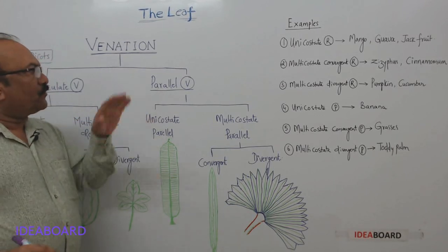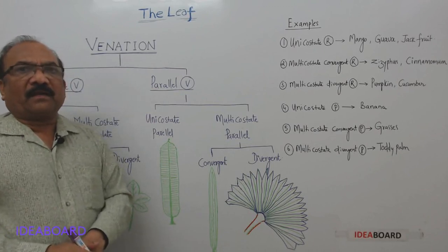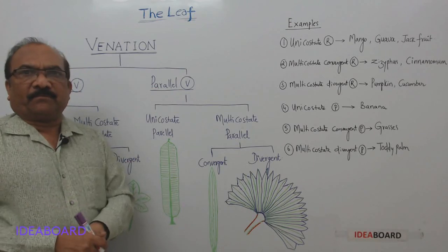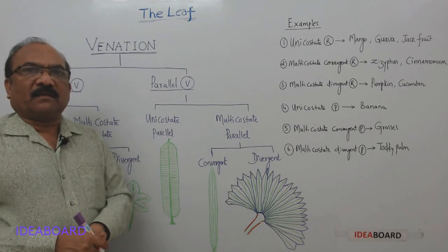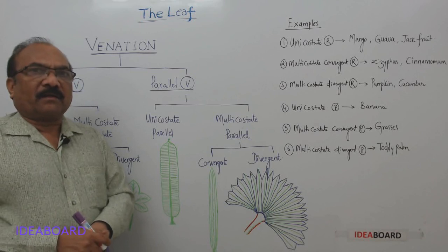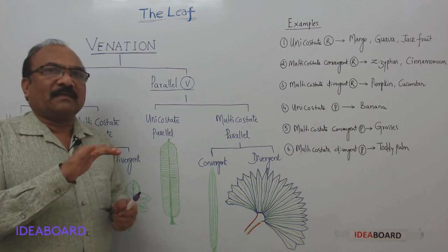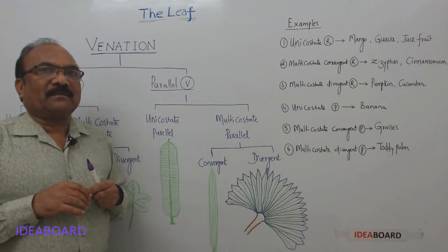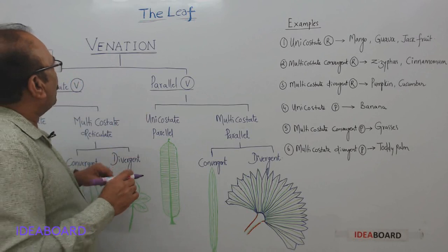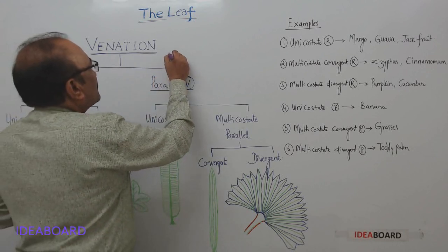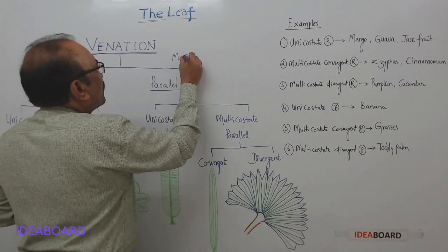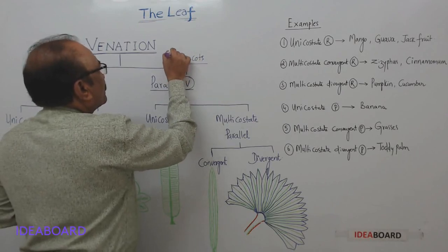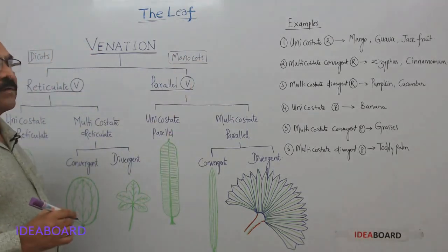When we come to parallel venation, here also you will find the midrib, lateral veins, sub-lateral veins, and veinlets — but all of them run parallel. They do not make a net-like arrangement. That is why this venation is called parallel venation, and it is characteristic among the leaves of monocots.